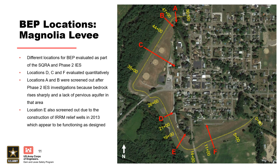During a risk assessment, multiple failure pathways will be identified and may need to be evaluated. This slide provides examples of multiple locations for backward erosion piping considered for Magnolia levee. Some pathways were screened, some were assessed semi-quantitatively, and some required a quantitative assessment. Finding the weak link in the foundation based on geomorphology, previous levee performance, and other factors is critical.